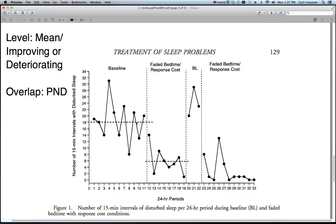Now let's talk about data overlap. When you first look at this study, you can see there is this improving change in level. But you can also see there's not a lot of stability in this data, and we've looked at that in another video. So we want to consider how much overlap there is between the data points across phases. There are lots of different ways to do that, but one of the most common ways is the percentage of non-overlapping data model.